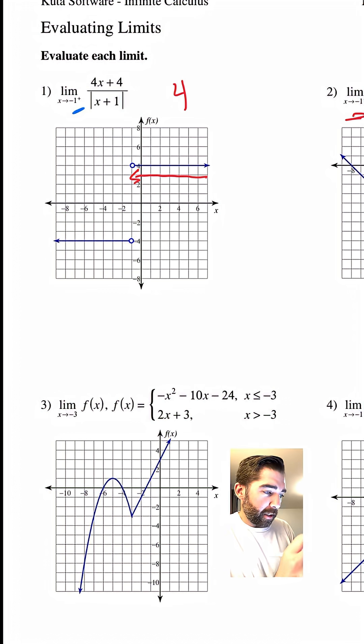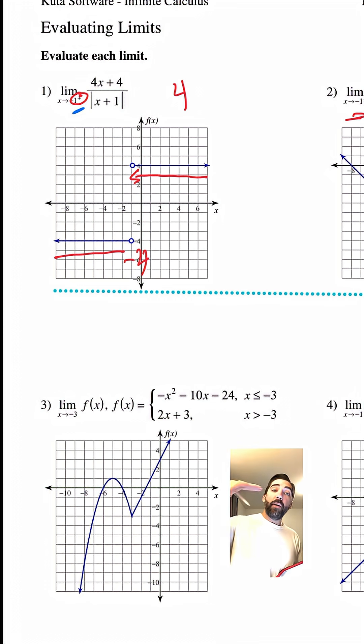What if it was approaching from the left? Like we will get here. But if number 1, if we're approaching from the left, the answer would be, you got it, negative 4. So you just got to see where is it approaching from. Positive means we're coming from the right. Negative means we're coming from the left.